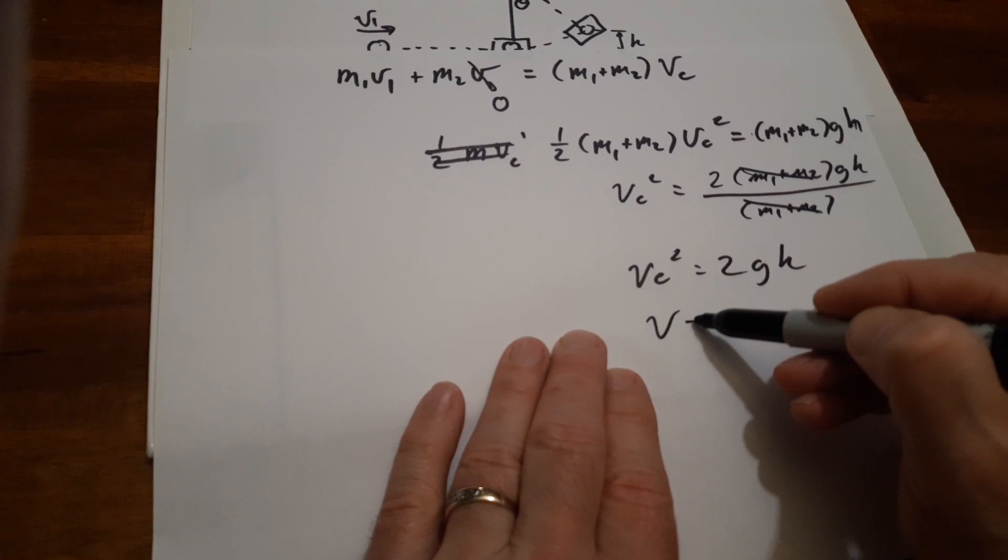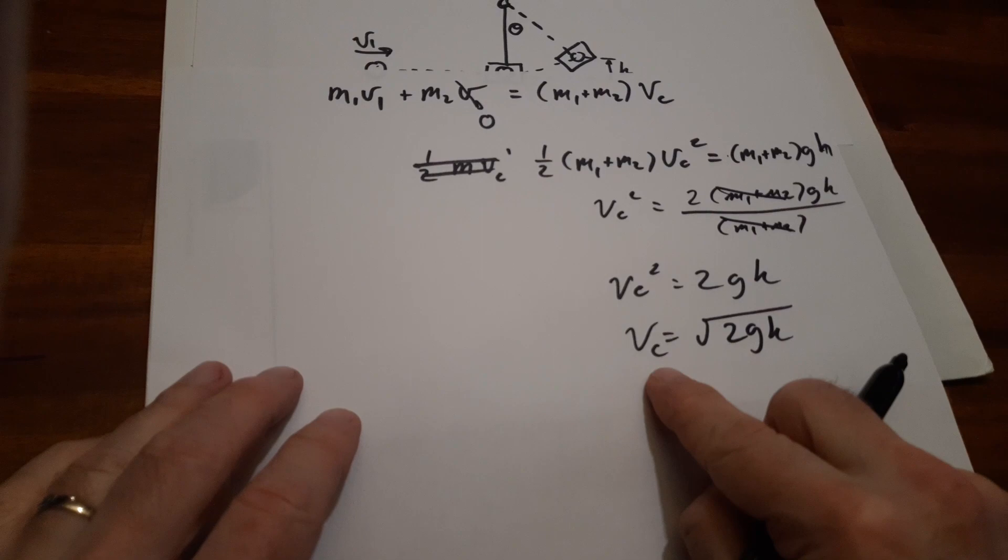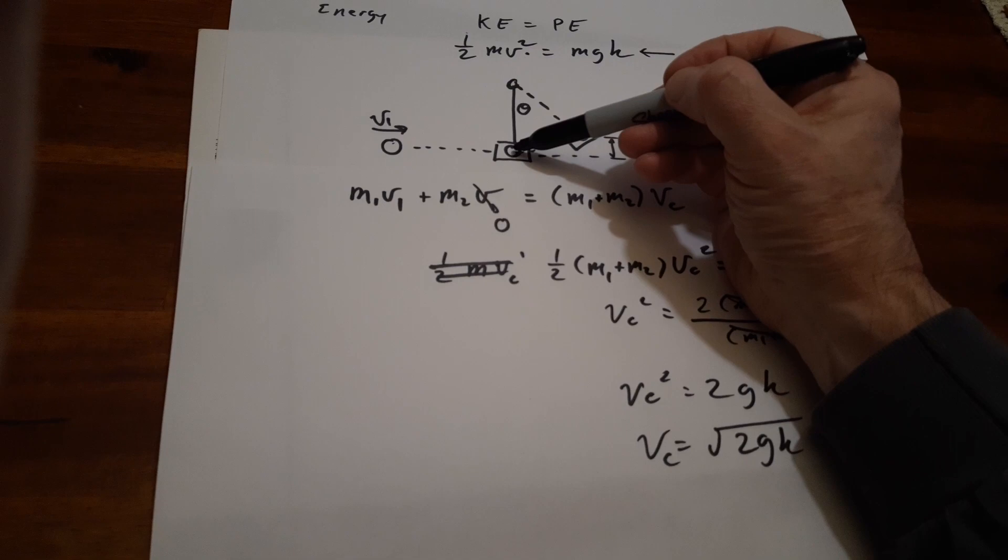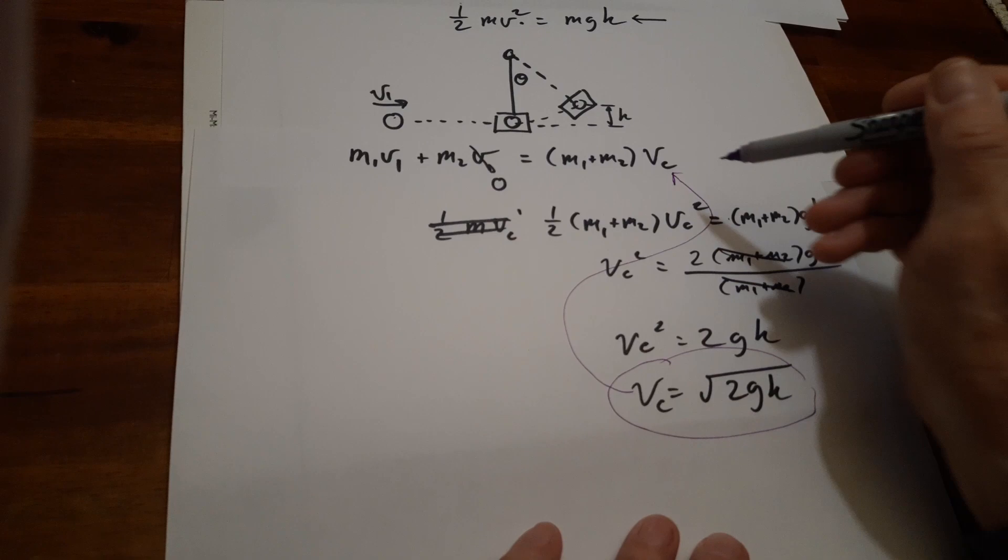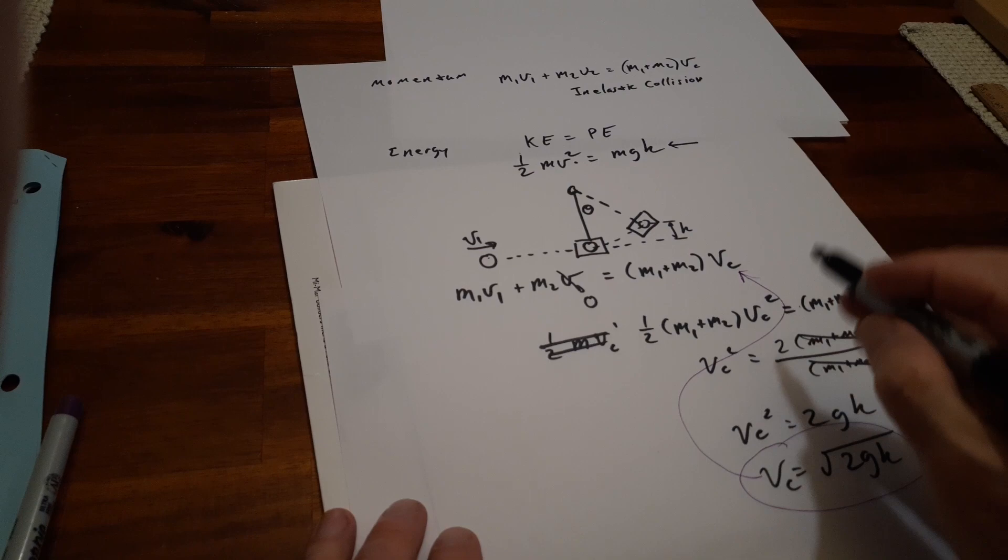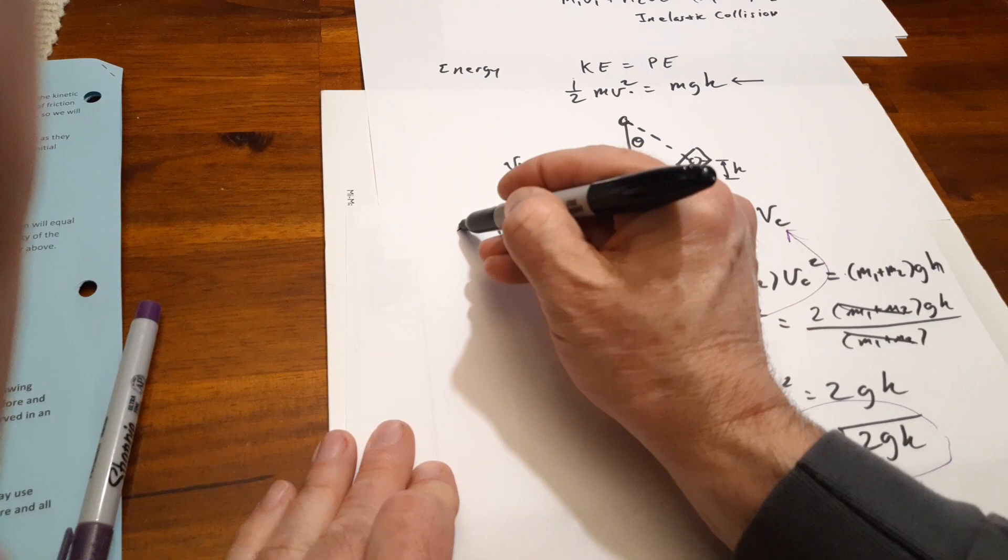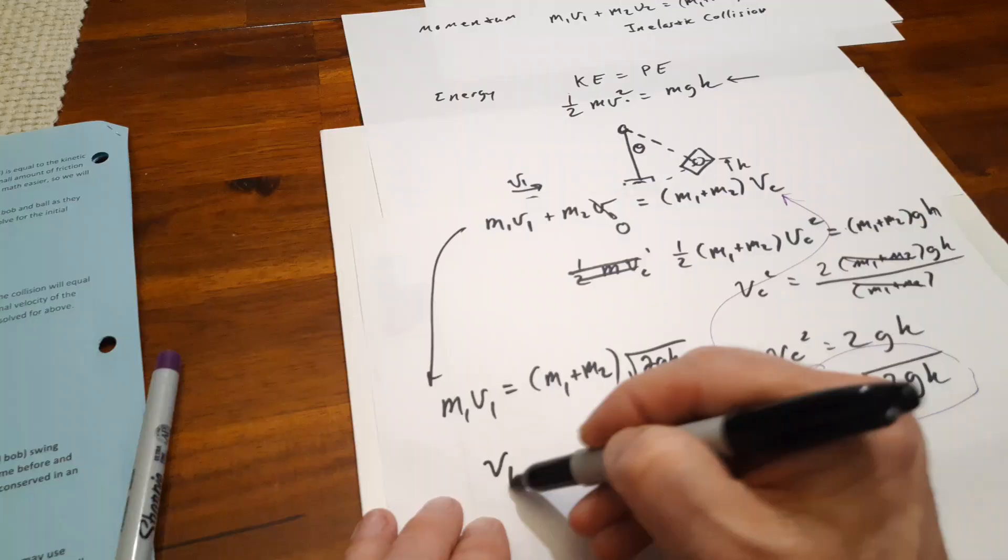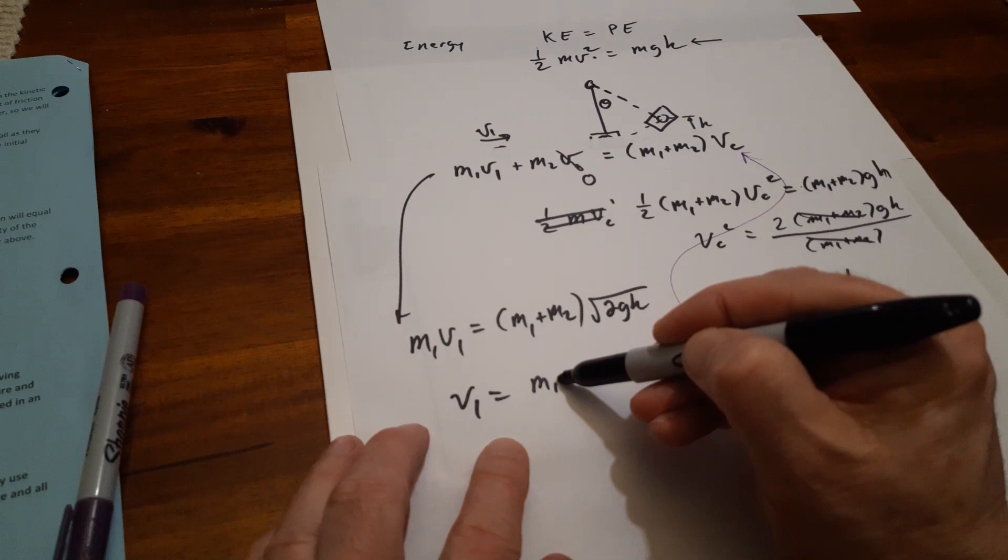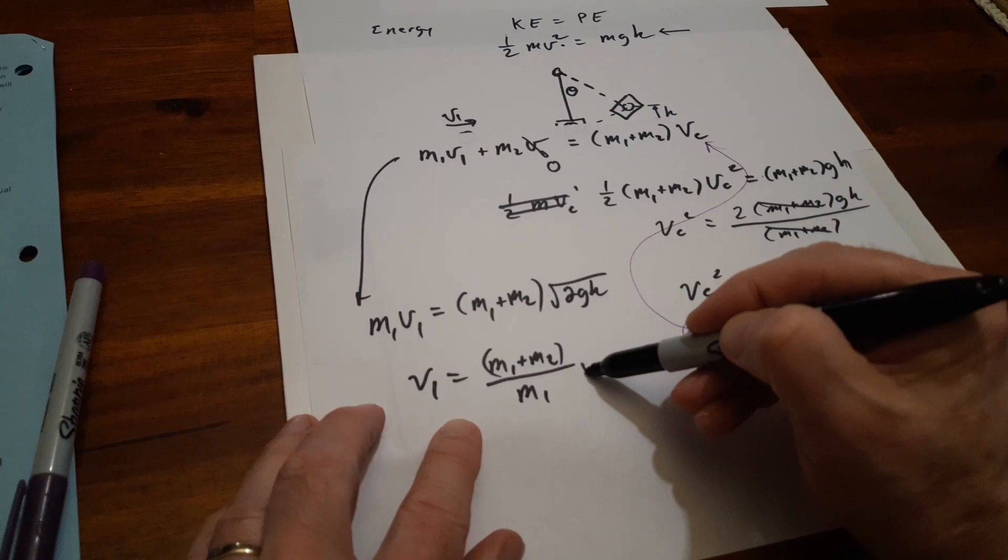That's the velocity of the pendulum just as it starts to swing. Now let's take this guy and put him back up here. So that's zero, so now it gives us M1V1 equals (M1 + M2) times square root of 2GH. And finally, that's the launch velocity. So that's the final equation we're using to find the velocity of the ball bearing at launch point.